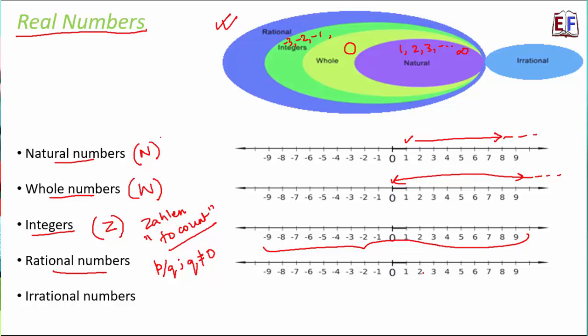Rational numbers are denoted by capital Q. The word 'rational' is derived from 'ratio', and Q comes from 'quotient' — because when we talk about a ratio we are dividing two numbers and getting a quotient. That is why Q is used for rational numbers.